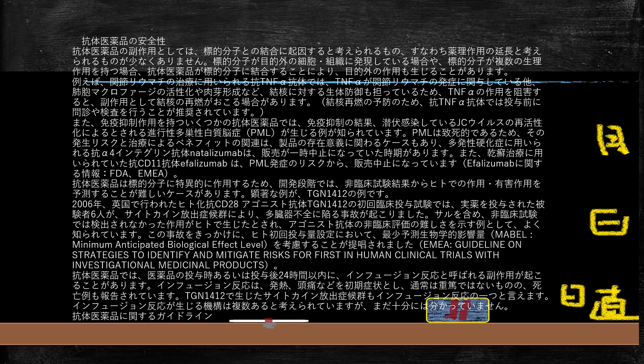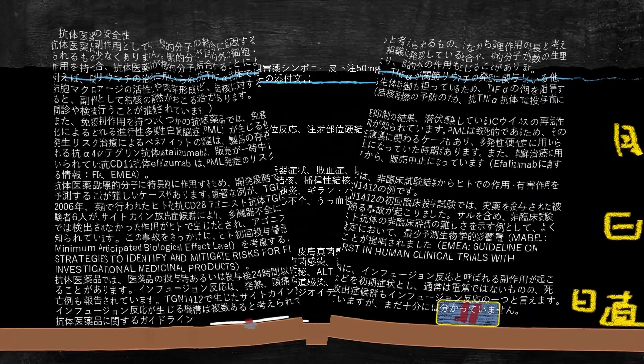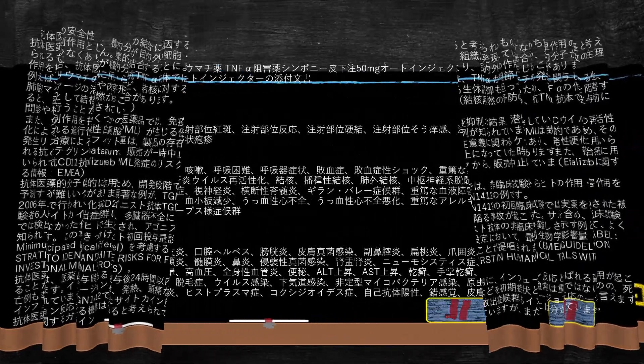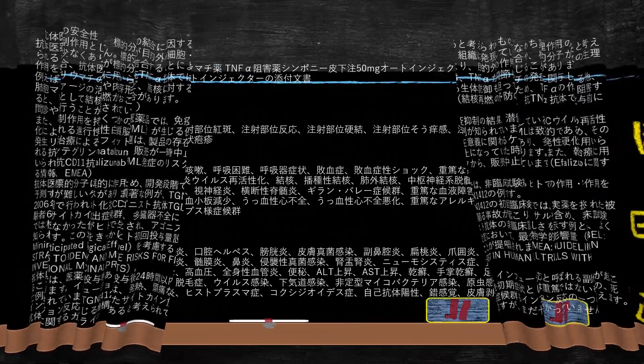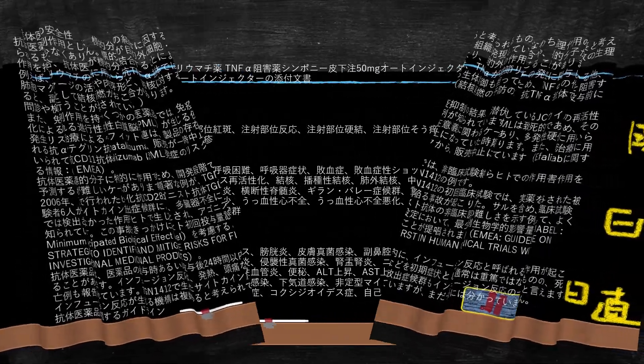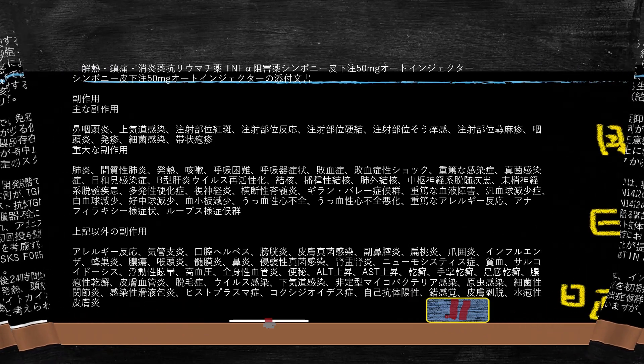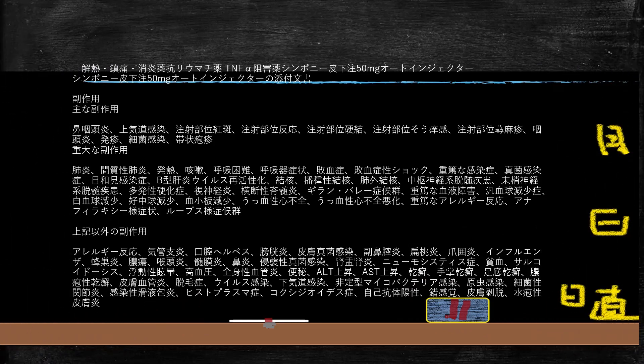では次のスライドでは、この手の薬の添付文書を見てみましょう。医薬品添付文書を見てみましょう。これは抗体阻害薬ですね、モノクローナル抗体製剤です。